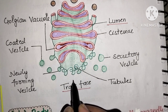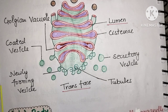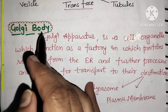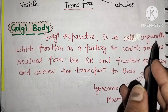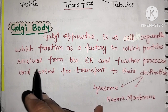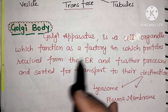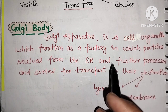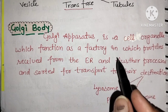The newly forming vesicles are found at this face. The Golgi apparatus is a cell organelle which functions as a factory in which proteins are received from the endoplasmic reticulum, further processed, and sorted for transport to their destination.